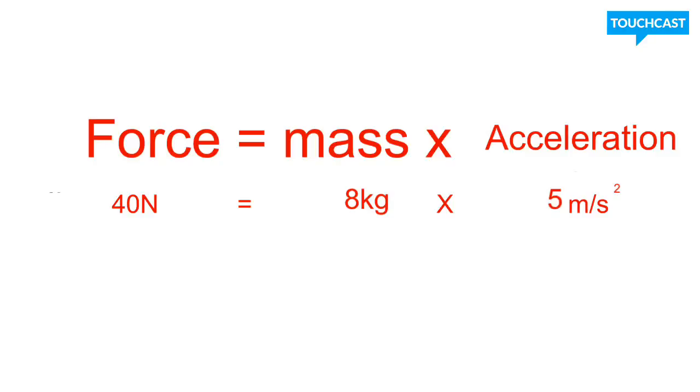You would simply have 5 meters per second squared times your 8 kilograms, that gives you your 40 newtons of force. So basically what we did here is as you add more mass and the force stays the same, the acceleration has to go down. If your mass is going up and your force is staying the same, your acceleration has to go down.